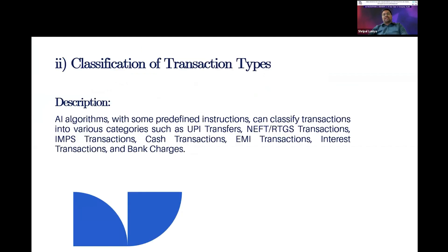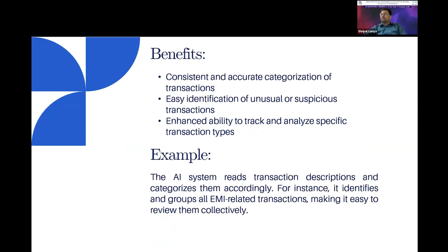In the second part, we will practically demo classification of transaction statements. Through AI algorithms with predefined instructions, we will classify transactions into various categories such as UPI transfer, NEFT, RTGS transactions, bank interest paid and collected, EMI transactions, insurance-related transactions, and more. The benefits include consistent and accurate categorization of transactions, easy identification of unusual and suspicious transactions, and enhanced ability to track and analyze specific transactions.